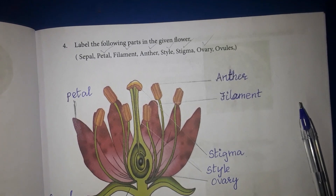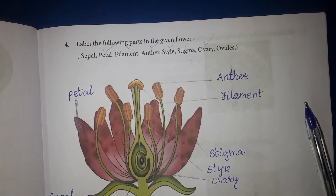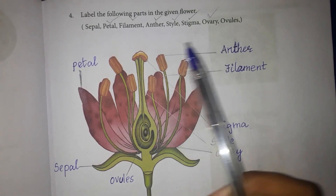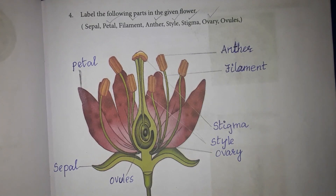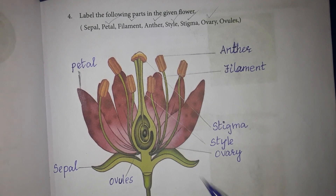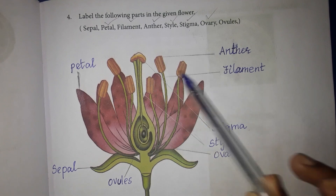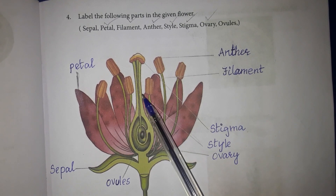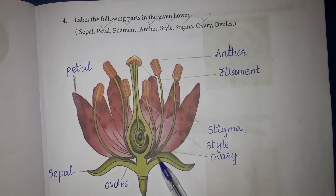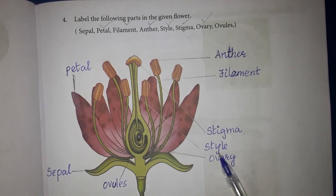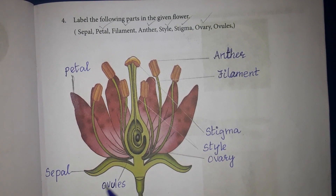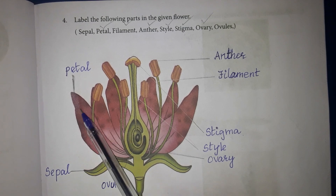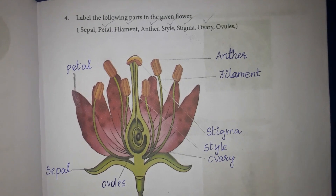Question 4: Label the following parts in the given flower. In the flower we will mark the parts. First, look — this is stigma, style, ovary, ovules, sepal, petal, and filament.